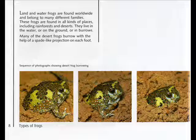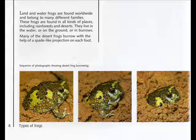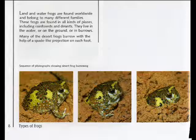Land and water frogs are found worldwide and belong to many different families. These frogs are found in all kinds of places, including rainforests and deserts. They live in the water, on the ground, or in burrows. Many of the desert frogs burrow with the help of a spade-like projection on each foot.